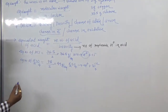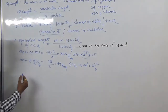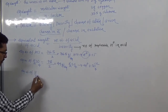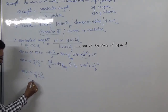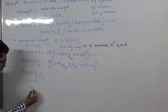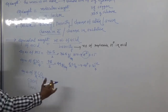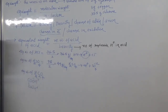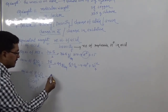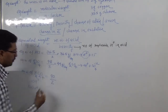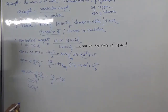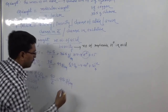For oxalic acid, the formula is H₂C₂O₄. It has two carboxyl groups, so there are two replaceable H⁺ ions. The molecular weight of oxalic acid is 90, so 90 divided by 2 gives an equivalent weight of 45 gram per equivalent.